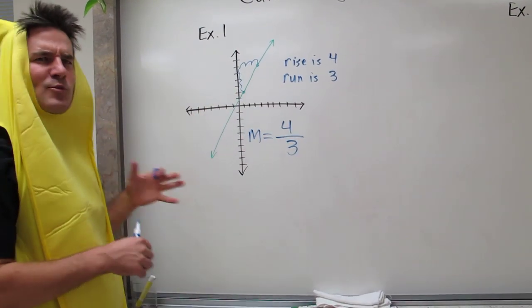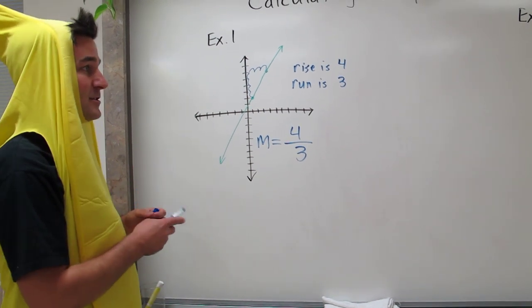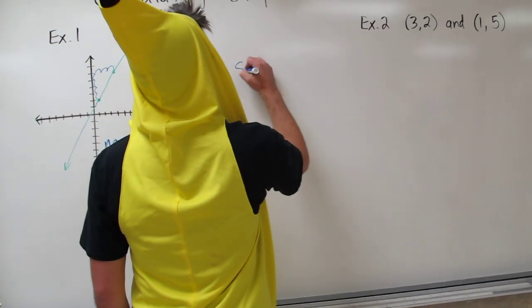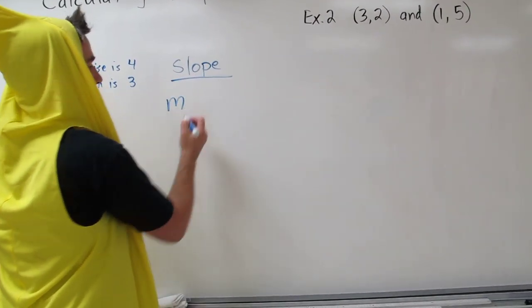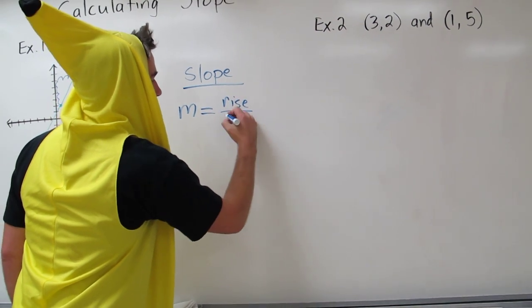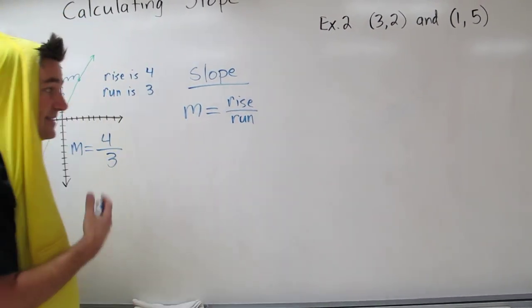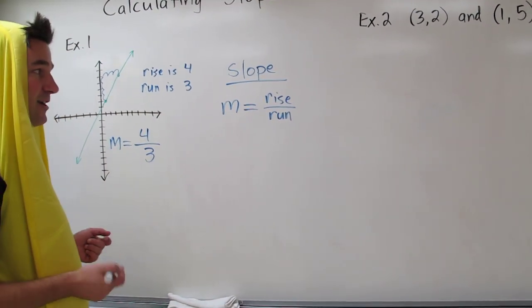So using this and this, we can see what our calculation or our formula for slope is. Slope or M equals rise over run. That's one way to calculate it. This is very useful if you have a graph of the line already.